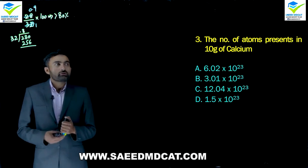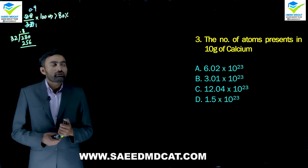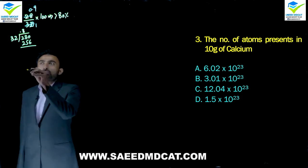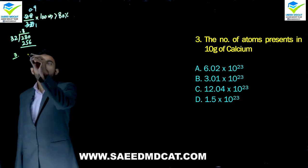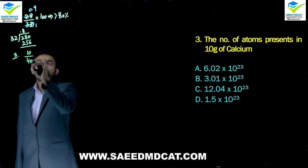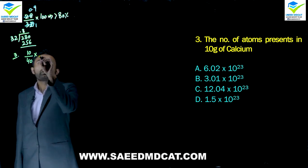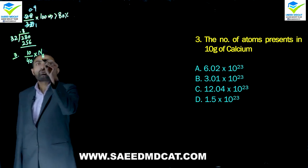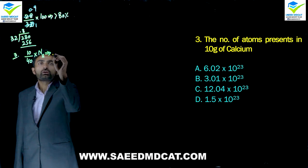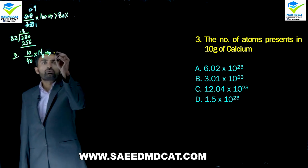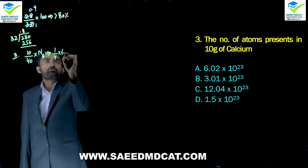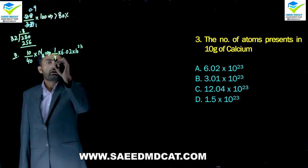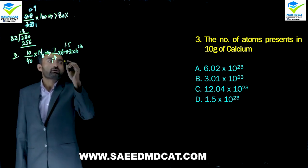Question 3: Number of atoms present in 10 grams of calcium. The formula is: mass ÷ molar mass × Avogadro's number. We get 10/40 × 6.02×10²³ = 0.25 × 6.02×10²³, which gives approximately 1.5×10²³. So delta option is correct.